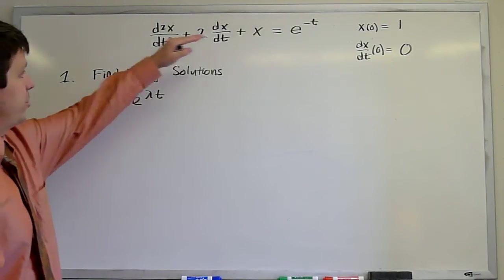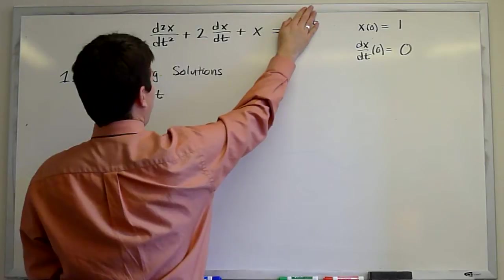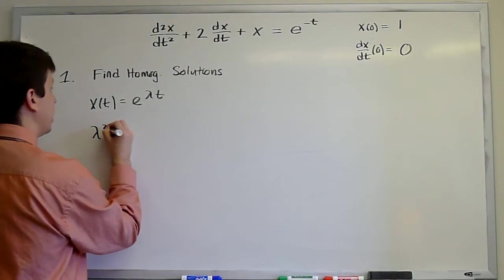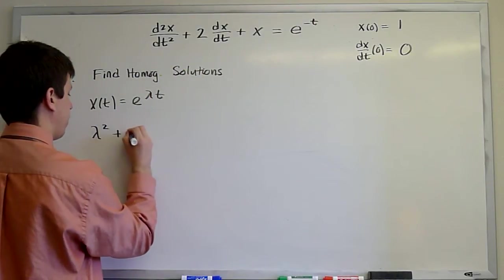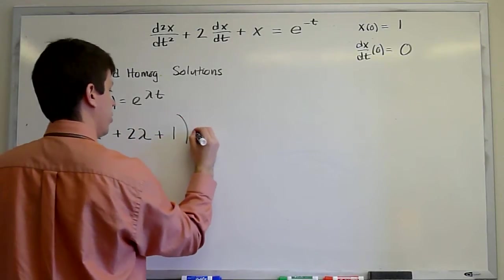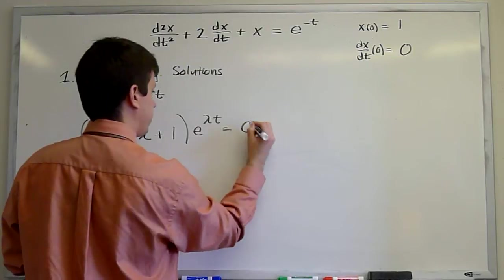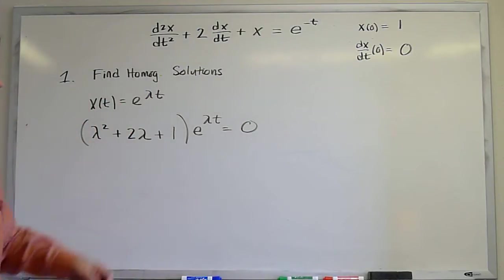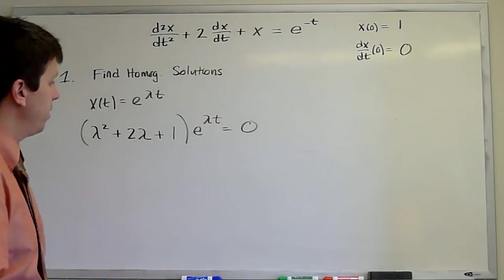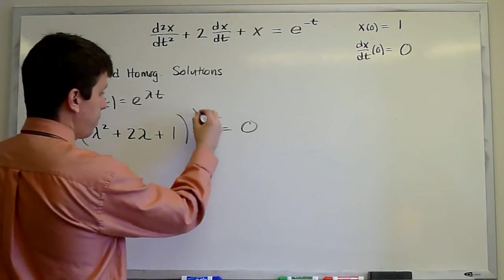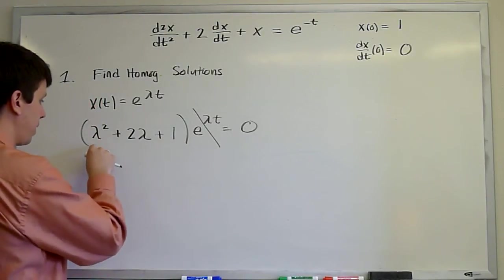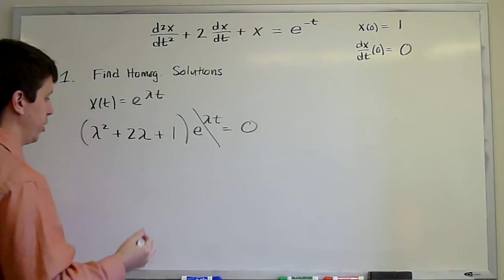When we insert that guess into the homogeneous problem, each derivative in t would pull down a power of lambda. We would get lambda squared plus 2 lambda plus 1, all of those multiplying e to the lambda t. And this would be the reduction of the homogeneous problem under the guess x of t equals e to the lambda t. Now the only way this can be zero is if this part here is zero. This is called the characteristic equation. And so we must find values of lambda for which the characteristic equation is zero.